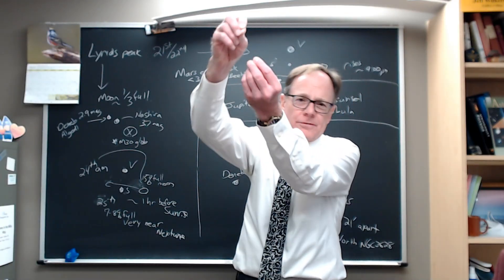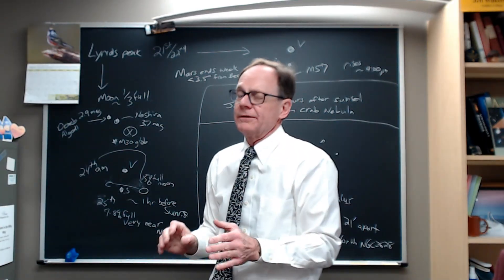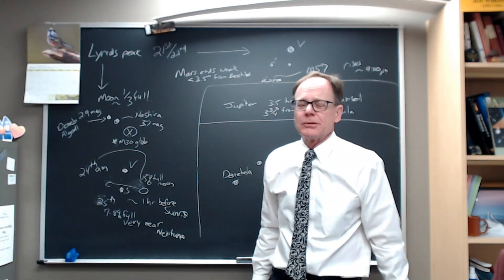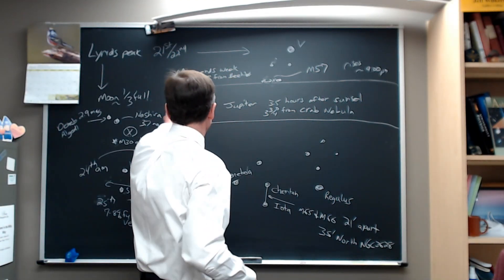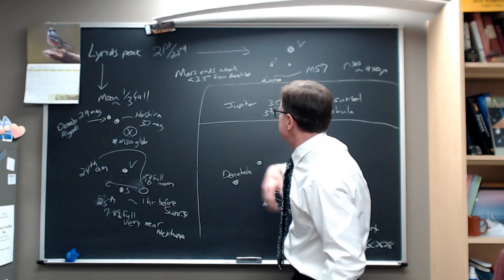By the end of the week, last week we said Mars is pulling away from Castor and Pollux. We've been tracking it every week, headed toward the beehive cluster M44 in the heart of the constellation Cancer. By the end of the week, it will close down to about three and a half degrees, about a third of a fist width at arm's length. So less than three and a half degrees from the beehive cluster.